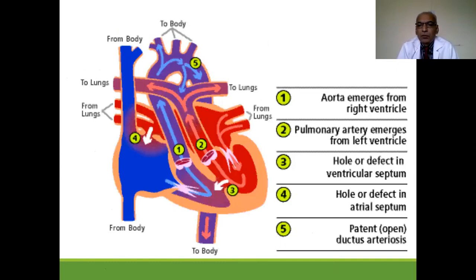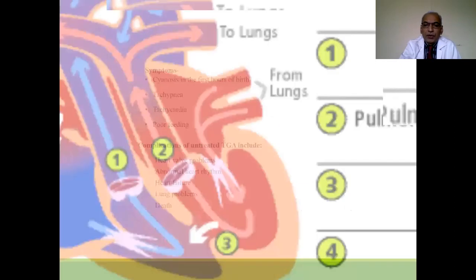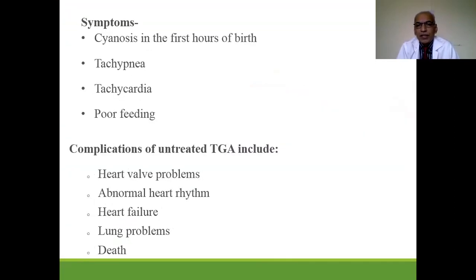The aorta emerges from the right ventricle and the pulmonary artery from the left ventricle. There may be a ventricular septal defect, atrial septal defect, and patent ductus arteriosus. The child is cyanotic immediately after birth, with tachypnea, tachycardia, and poor feeding.